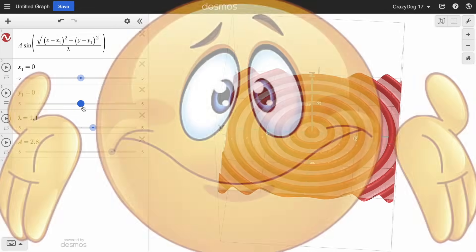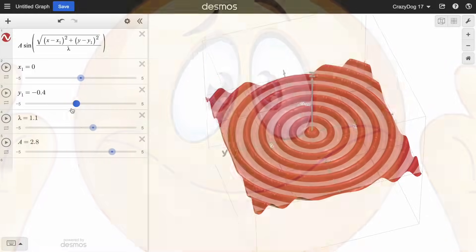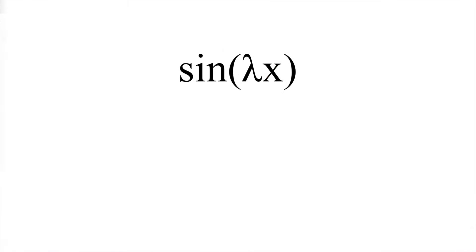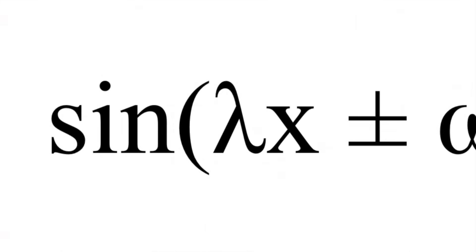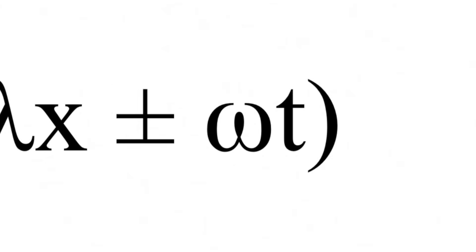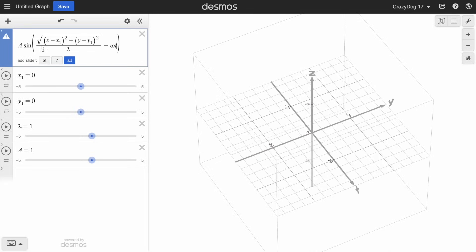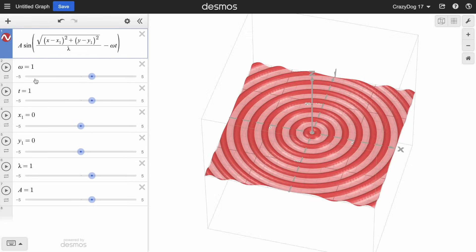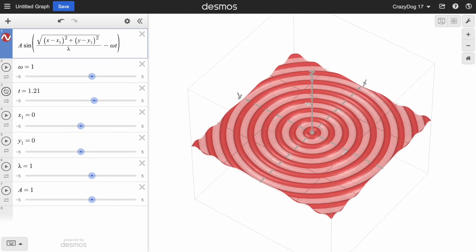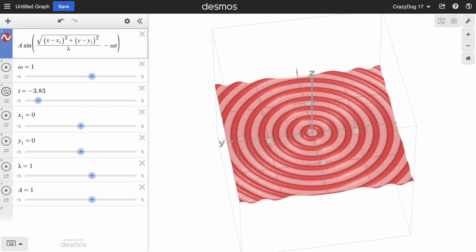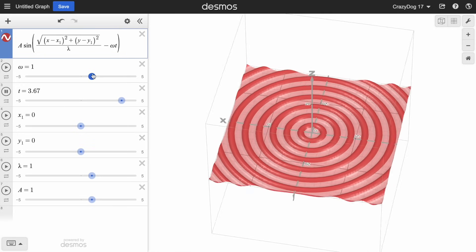So now, how do we animate it? All waves have two components to them: the spatial component and the time component, which you just add on inside the argument. Here, lambda is still wavelength, and the omega is actually the speed of your wave. If you go back to Desmos, we can go ahead and add in a minus omega t, add the sliders, and if we hit animate on t, making sure that it animates forward, then you should see the waves propagating outward.